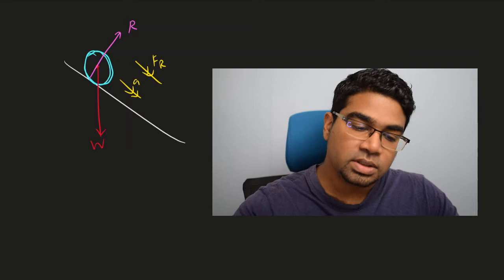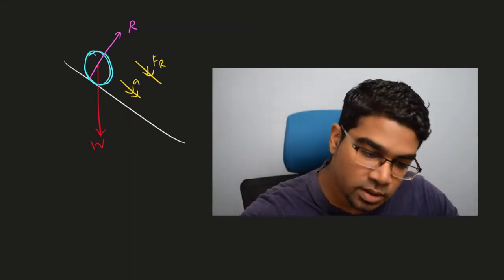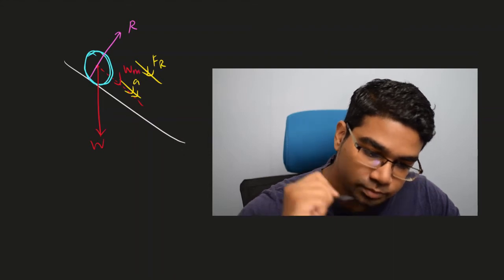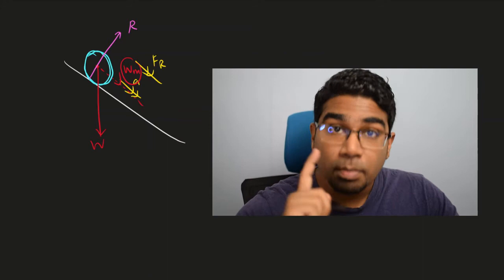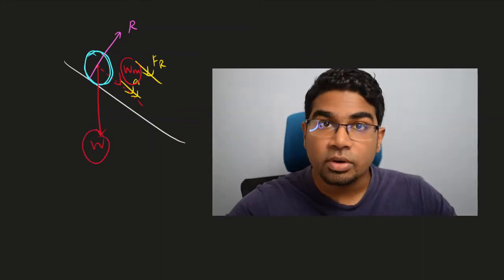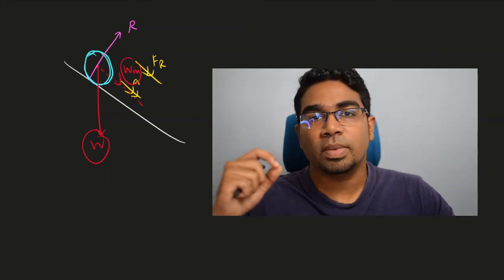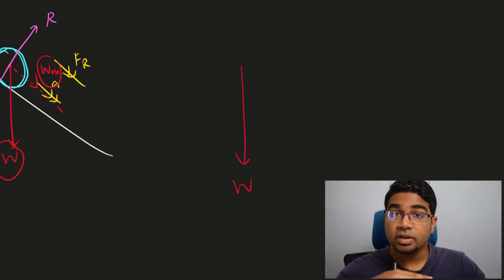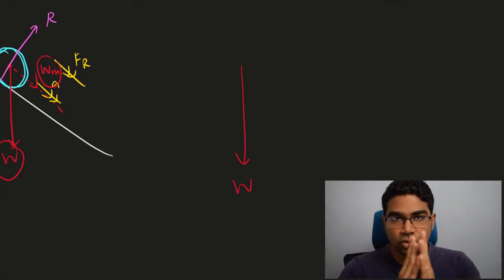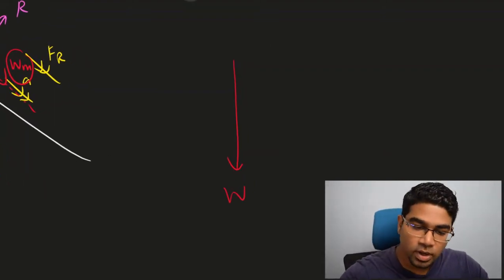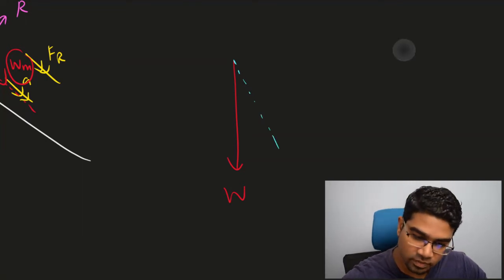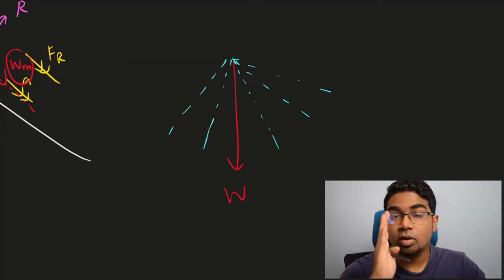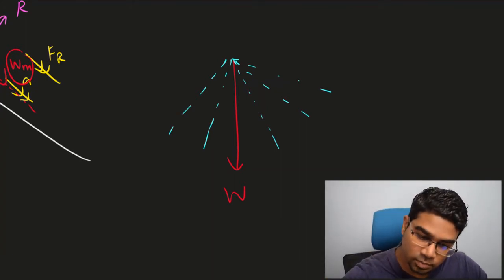We know that there must be a force down the slope, and that force is actually a component of the weight — let's call it Wm. This Wm is a component of the weight. How do you find the magnitude of Wm? This is when we apply resolution of forces. Remember that a force can be resolved in any direction — it will have an effect in any direction up to 90 degrees to the force. Weight will have a component in this direction, this direction, and in all these directions until perpendicular to the force.